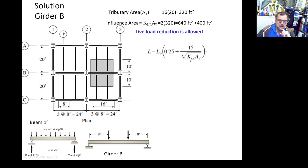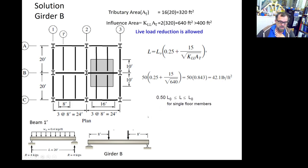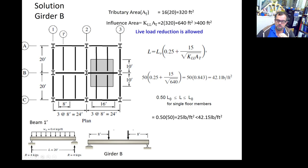Applying the US unit formula with L₀ = 50 psf and influence area = 640, the reduced live load is 42.1 pounds per square foot. We verify: 50% of the original load is 25 psf. Since 42.1 is greater than 25, the reduction is acceptable and we use 42.15 psf.